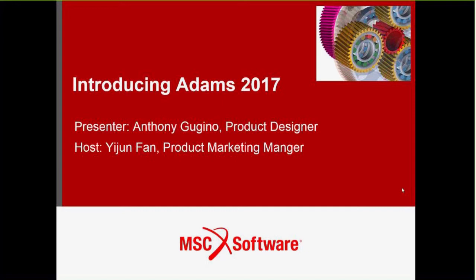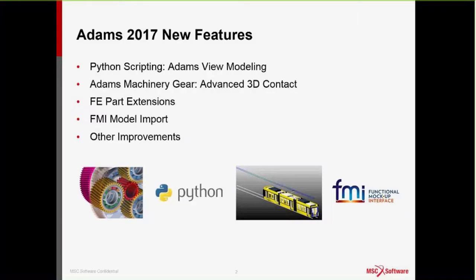Hi everybody. I'm going to take us through the new feature content in the Adams 2017 release — four major new features: Python scripting, our advanced 3D contact in Adams Machinery Gear, a series of extensions to the FE part, and FMI model import, as well as a number of other miscellaneous improvements.